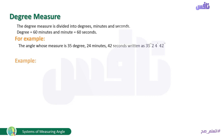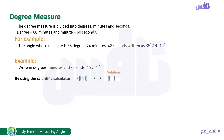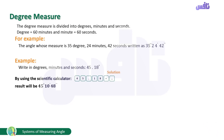Example: write in degrees, minutes, and seconds: 45.18 degrees. So the angle is given in decimal degrees and we want to convert it to degrees, minutes, and seconds. We can do that by using a calculator: type 45.18, press equal, then press the button with three commas, then press equal. The result will be 45 degrees, 10 minutes, 48 seconds.